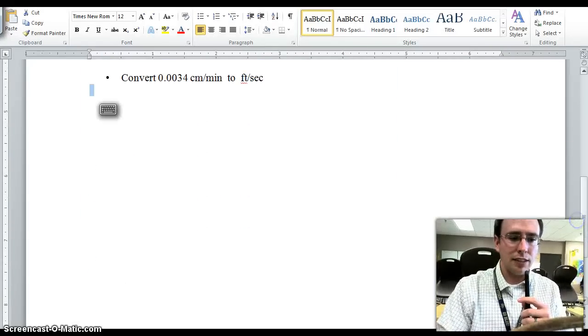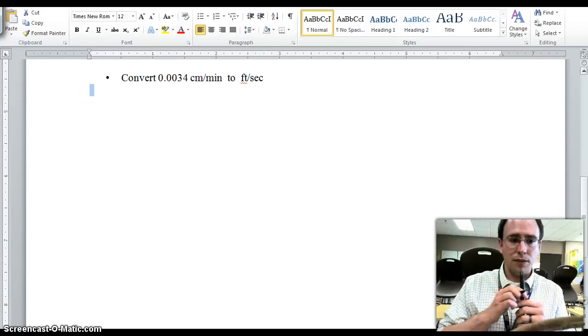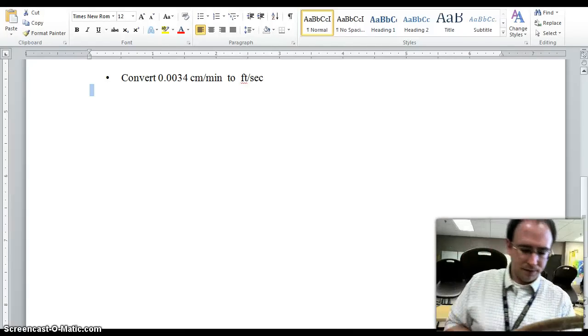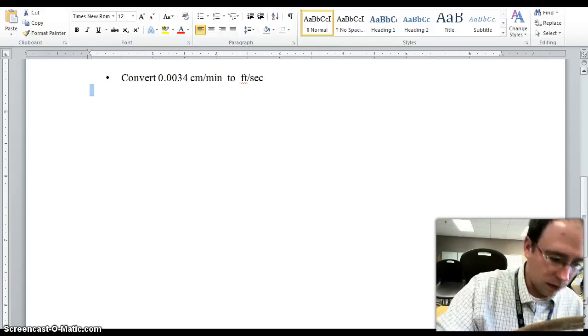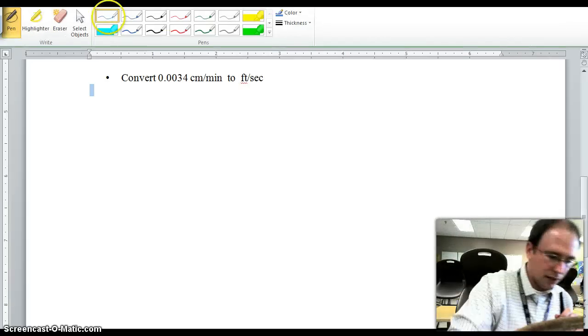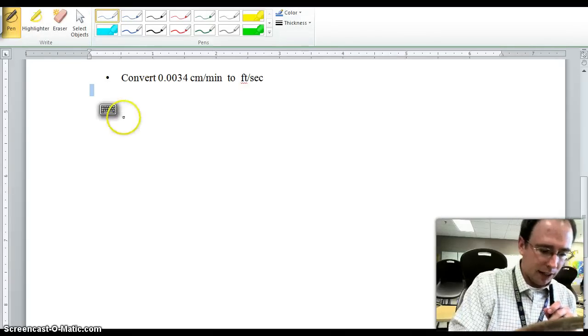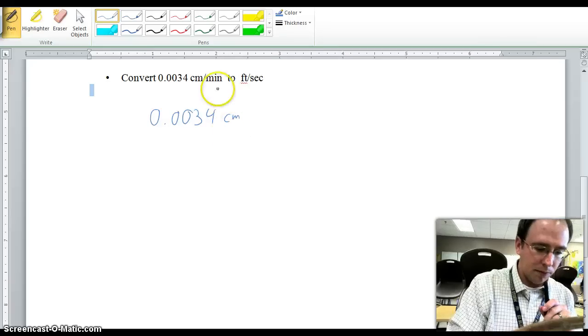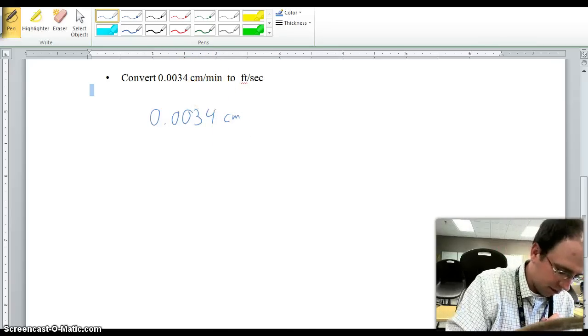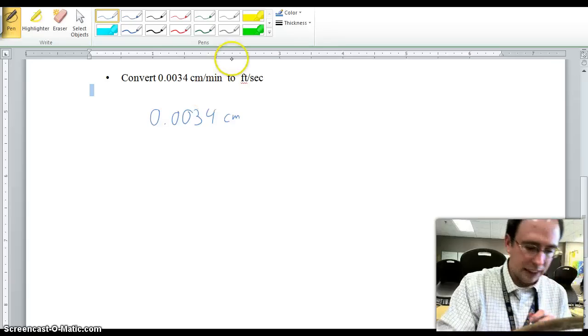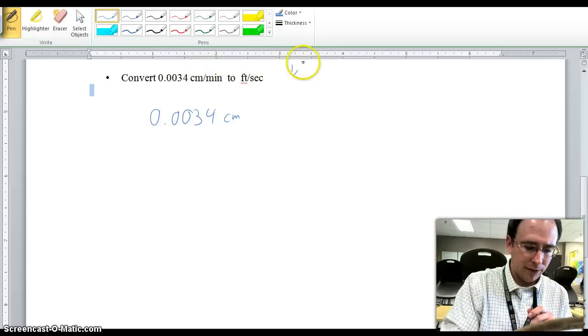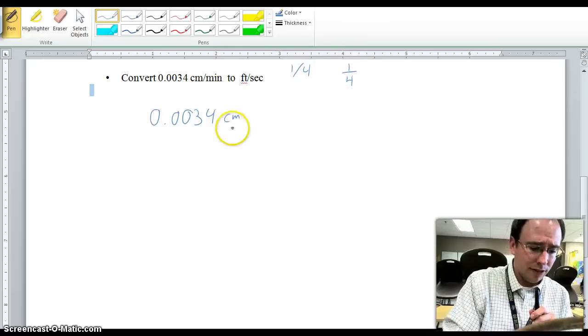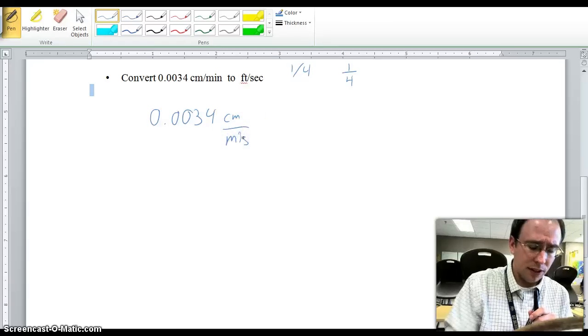So, let's take a look at this one where it says convert 0.0034 centimeters per minute to feet per second. So, here we go. When I'm doing this problem, I start off again with what they give me, 0.0034 centimeters per minute. Notice that it's written this way.